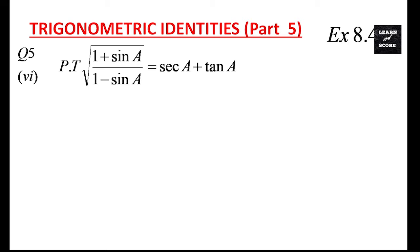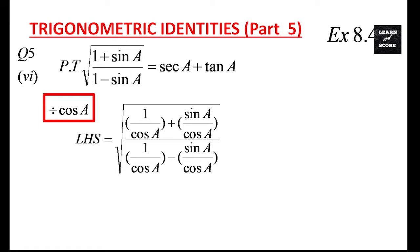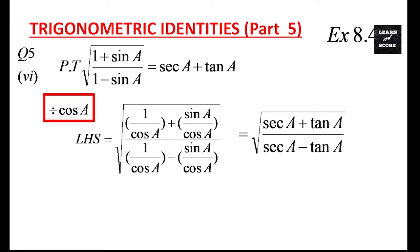The question is: prove that √((1 + sinA)/(1 - sinA)) = secA + tanA. Here the LHS is in terms of sine, and the RHS is in terms of sec and tan. We know that 1/cosA = secA and sinA/cosA = tanA. That means if we divide each and every term with cosA on the left side, we will get √((1/cosA + sinA/cosA)/(1/cosA - sinA/cosA)), that means √((secA + tanA)/(secA - tanA)).